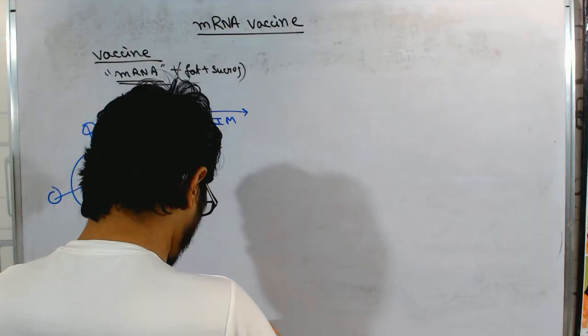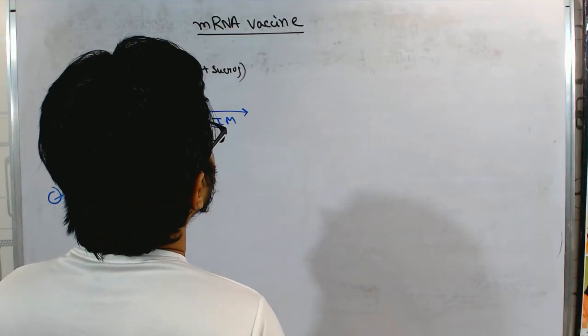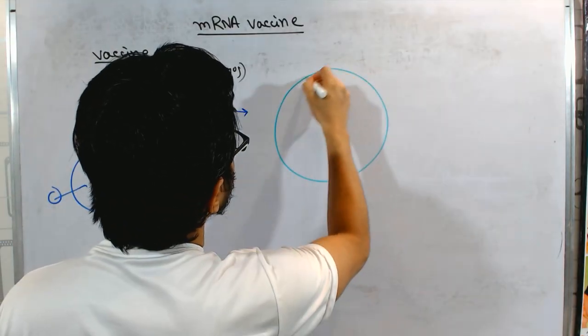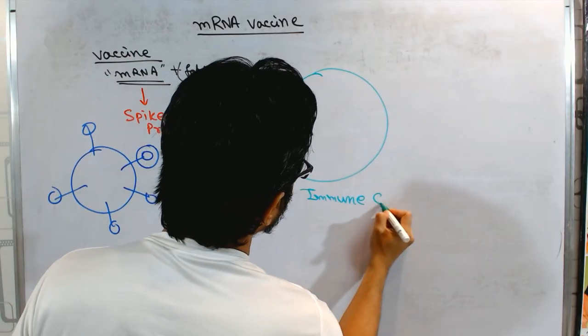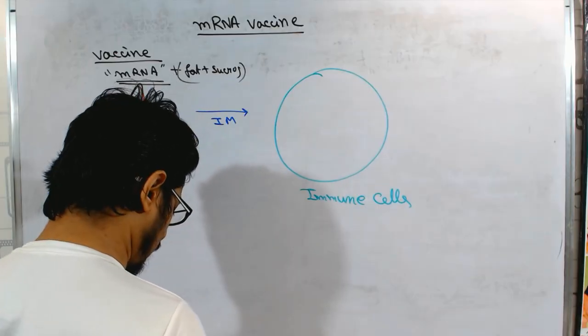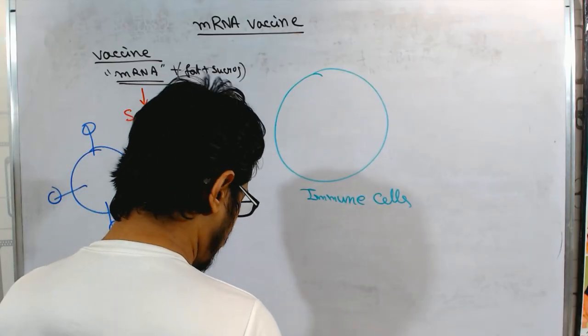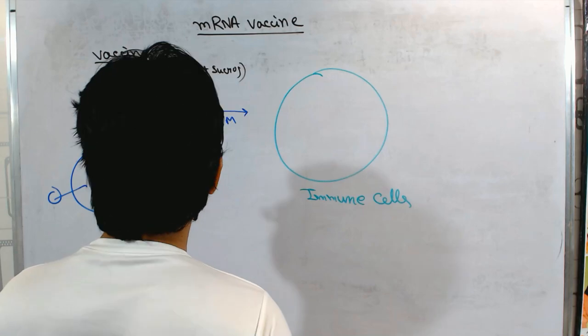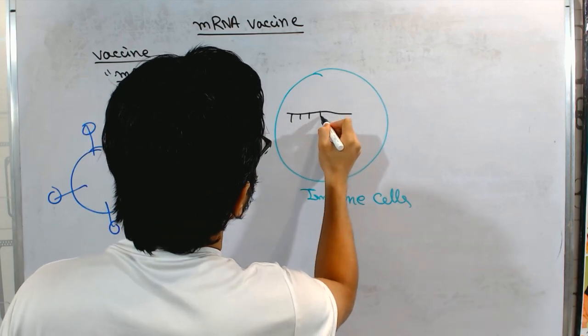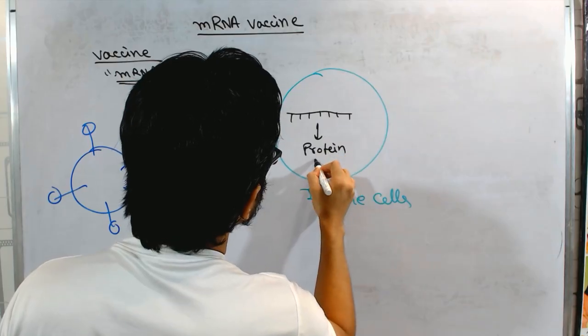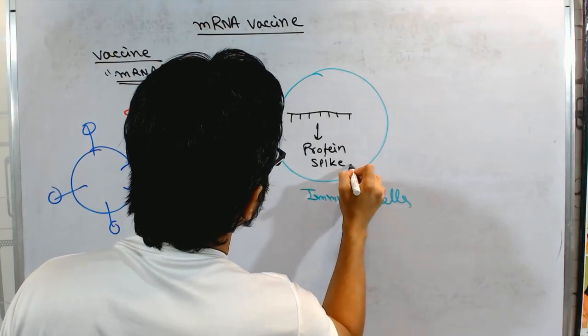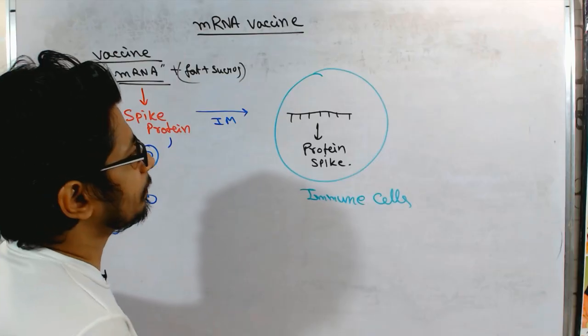Let me draw the cells. Our immune cells with the green color. Our immune system cells take up this. I am not specifying any. Let us talk about any kind of immune cells in the body. So immune cells take up this mRNA and the moment they take up this mRNA, they make the protein. They make the spike protein here. And once the immune cells start making the spike proteins,